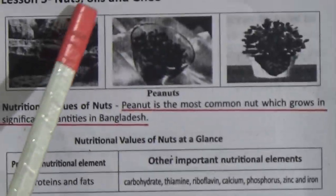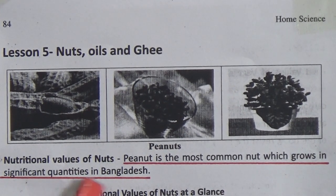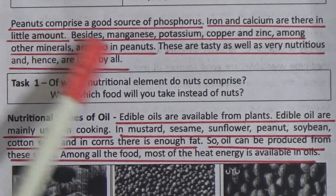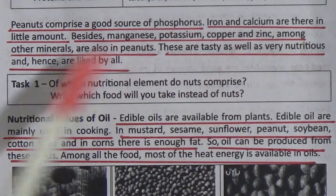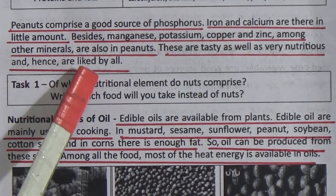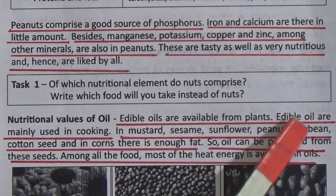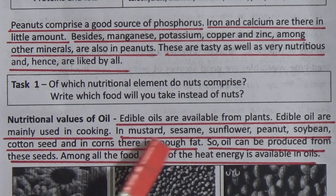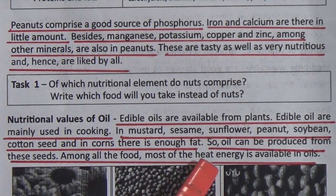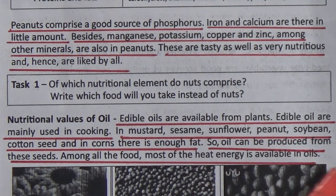Lesson 5: nuts, oils, and ghee. Nutritional value of nuts. Peanut is the most common nut grown in significant quantities in Bangladesh. Peanuts comprise a good source of phosphorus; iron and calcium are present in little amounts. Besides, manganese, potassium, copper, and zinc among other minerals are also found in peanuts. They are tasty as well as very nutritious. Nutritional value of oils — edible oils are available from plants. Edible oils are mainly used in cooking; sources include mustard, sesame, sunflower, peanut, soybean, and cottonseed. Oil can be extracted from these seeds. Among all foods, oil provides the most heat energy.